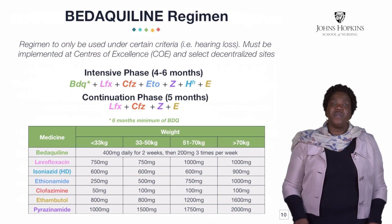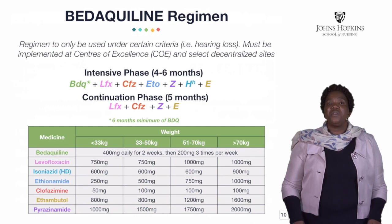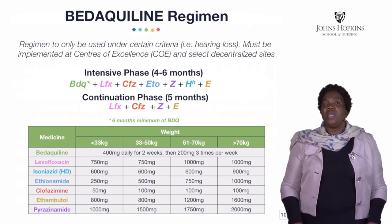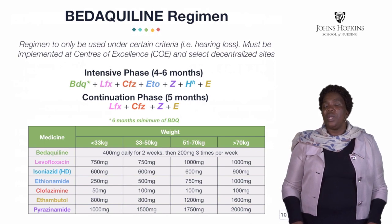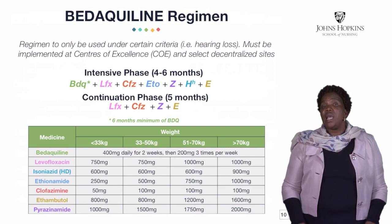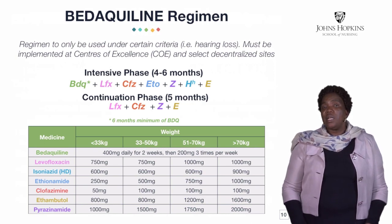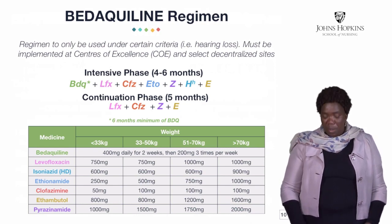Once you have started bedaquiline, the patient has to finish 24 weeks of treatment. We are still using weight-band dosing for our patients. With bedaquiline, it is 400 mg daily for two weeks, then 200 mg three times a week. You have to provide health education to the client so that they understand, because most DRTB drugs are taken daily. Once the client is changed to three times a week, they must be notified and educated on the schedule.